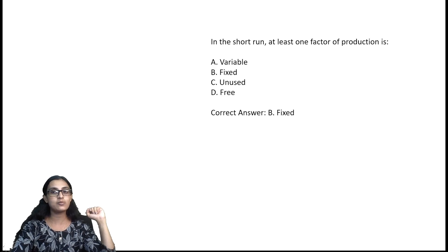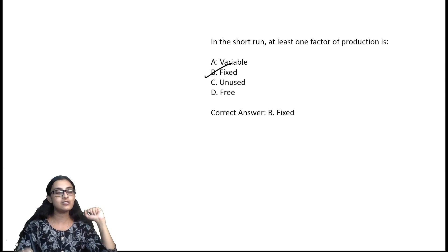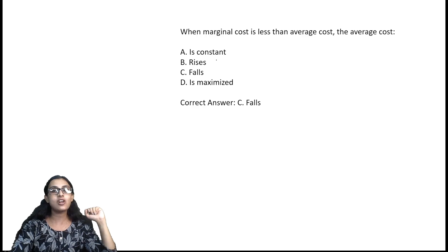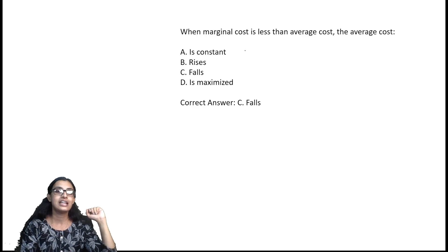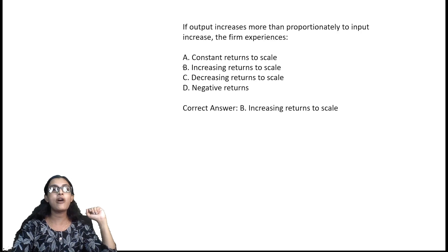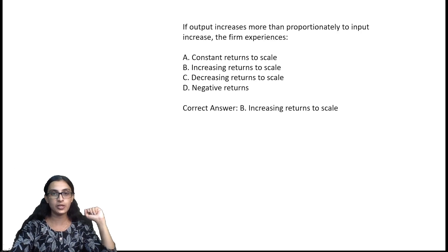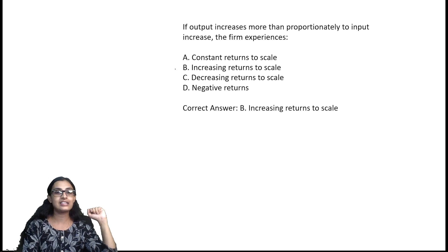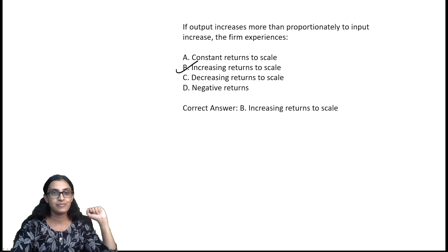In the short run, at least one factor of production is fixed. When marginal cost is less than average cost, the average cost is falling — option C. If output increases more than proportionately to input increase, the firm experiences increasing returns to scale.